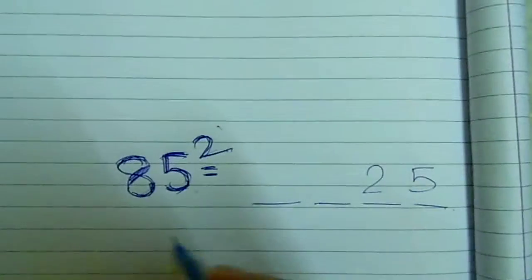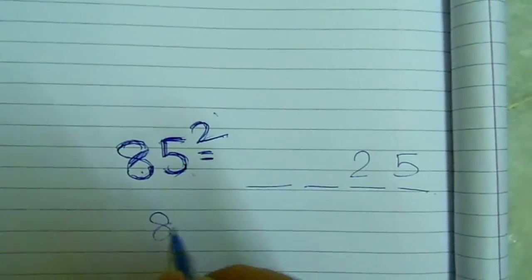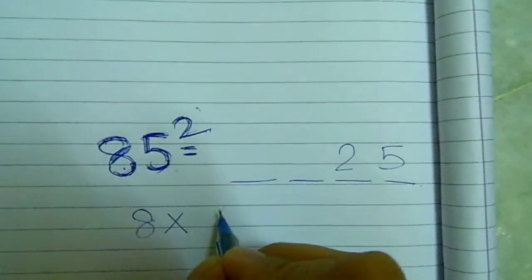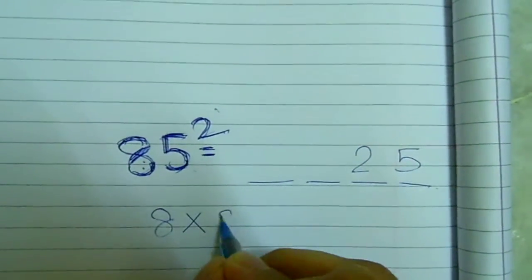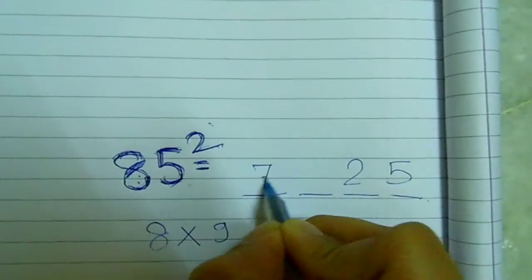To get these two digits, we will multiply this number by this number plus 1, that is 9. So we get 72.